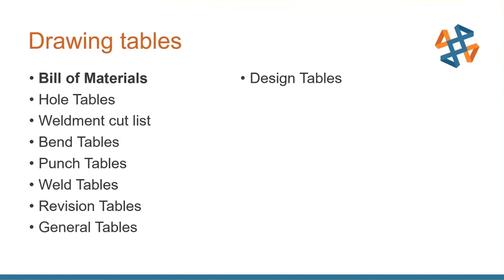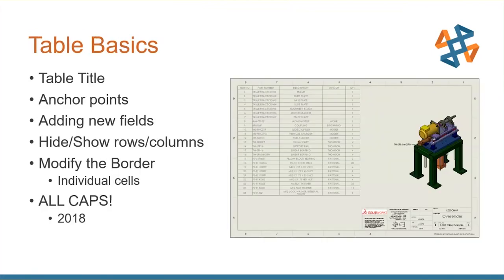The tables on the left are what I'll refer to as native SOLIDWORKS functionality — the table engine inside SOLIDWORKS generates all of them. The modifications, adding, editing, and saving are all applicable to those. I'll spend most of my time working with a bill of materials since they all behave the same. Design tables are completely different — they're essentially just an Excel spreadsheet.